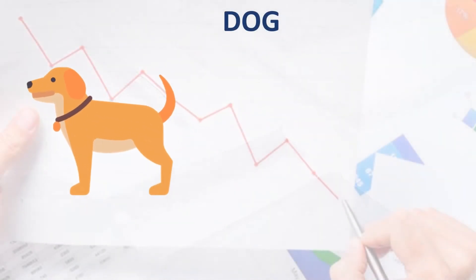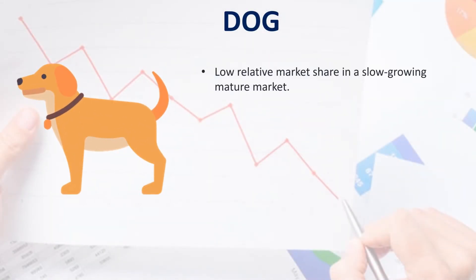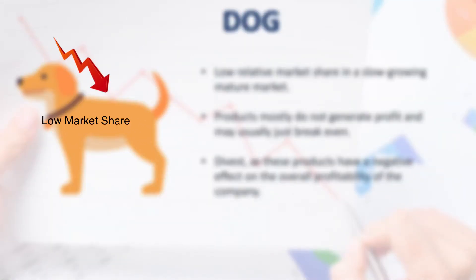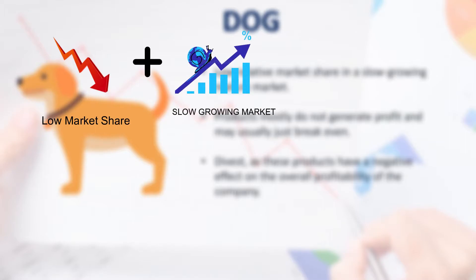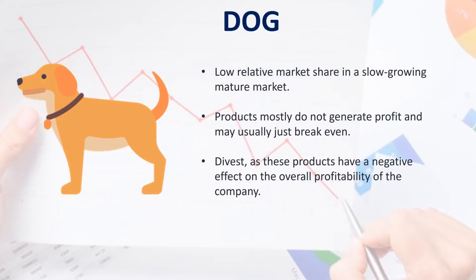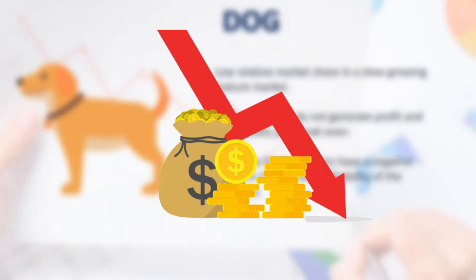The third market segment is dogs. It is characterized by low relative market share in a slowly growing or mature market. Products in this category mostly do not generate profit and may usually just break even. A company should divest from these products as they have a negative effect on the overall profitability.